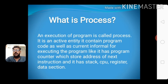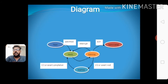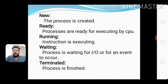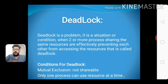What is a process? The execution of a program is called a process. It is an active entity; it consists of program code currently loaded for execution, a program counter which stores the address of the next instruction, and CPU registers. The process state diagram includes: new — the process is being created; ready — the process is ready for execution by the CPU; running — the instruction is being executed; waiting — the process is waiting for I/O or an event to occur; and terminated — the process has finished.